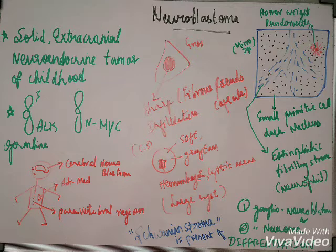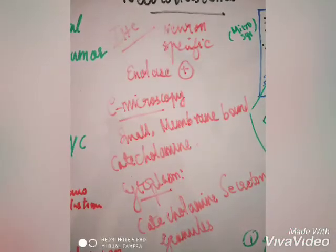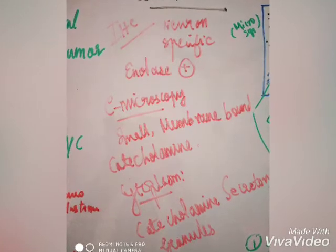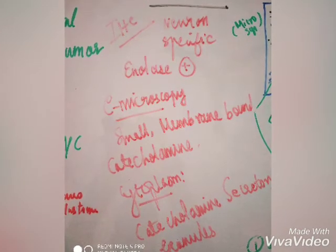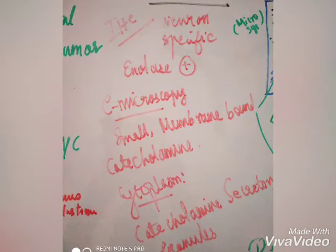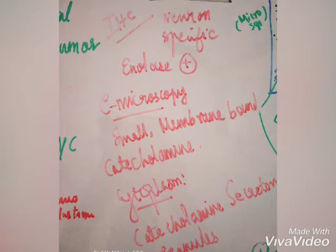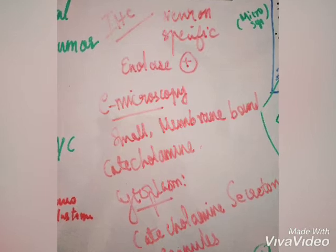Coming to immunohistochemistry, it shows positivity for neuron-specific enolase. Electron microscopy shows small membrane-bound catecholamine granules, and the cytoplasm shows catecholamine-secreting granules.